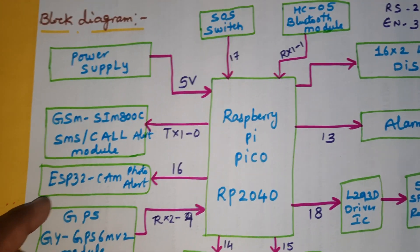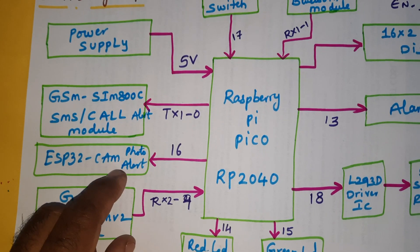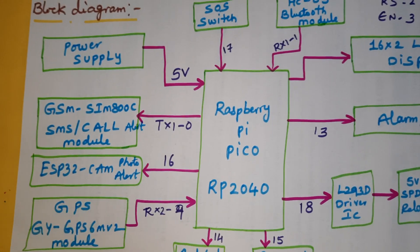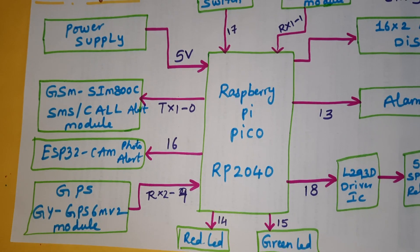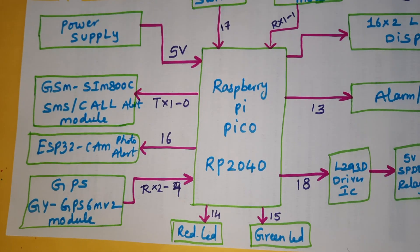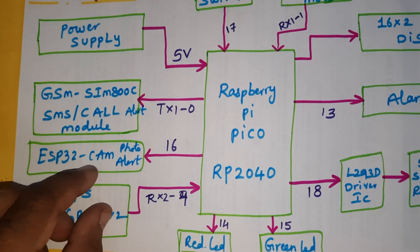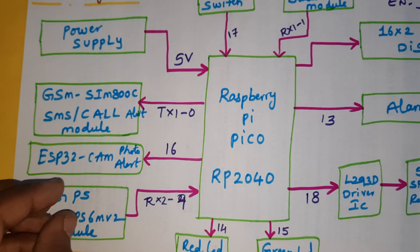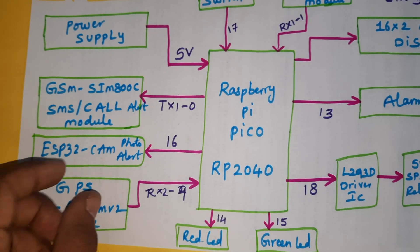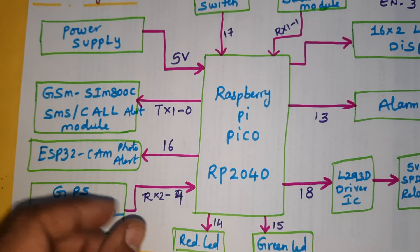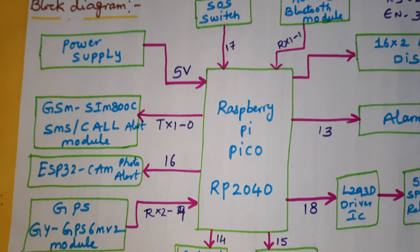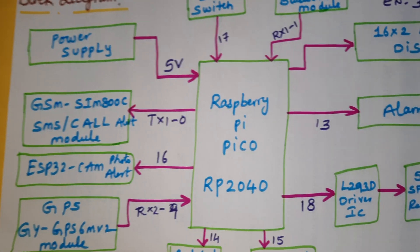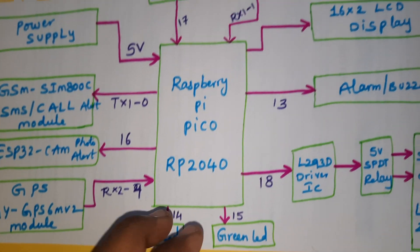The GPS GY6M V2 gets latitude and longitude from the satellite and sends it to the Raspberry Pi Pico board. Whatever emergency occurs, it will send through GSM. We are also using one ESP32 camera module - this mainly takes surrounding photos and sends them to the parents' mobile number. We take the internet from an external Wi-Fi hotspot from the same mobile phone.